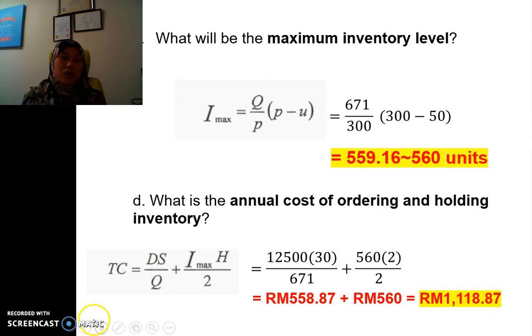So we have calculated, first we need to find the, we have the information on the production rate, and then we need to find the usage rate from the annual demand, and how many days they work in a year, and then we need to calculate the Q, and then from Q we can calculate how many production run per year for the sub-component.